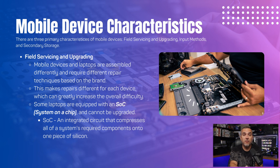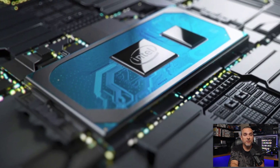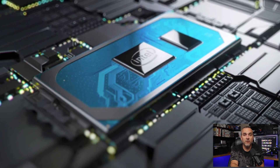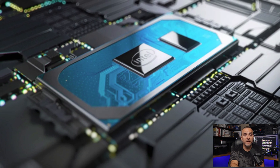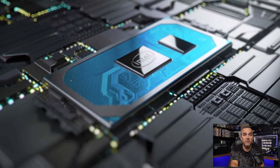There are three primary characteristics of mobile devices: field servicing and upgrading, input methods, and secondary storage. Field servicing and upgrading involves working with mobile devices and laptops, which are assembled in unique ways and demand specific repair methods depending on the brand, leading to increased complexity overall. Certain laptops come with an SOC, or system on a chip, which is an integrated circuit that consolidates all of the necessary system components onto a single piece of silicon. This means that any component integrated into the SOC — like the RAM, the CPU, or even the GPU — cannot be upgraded.